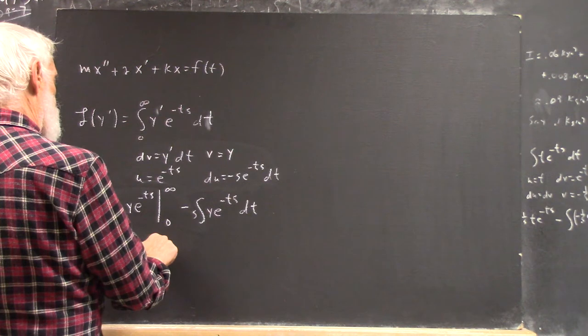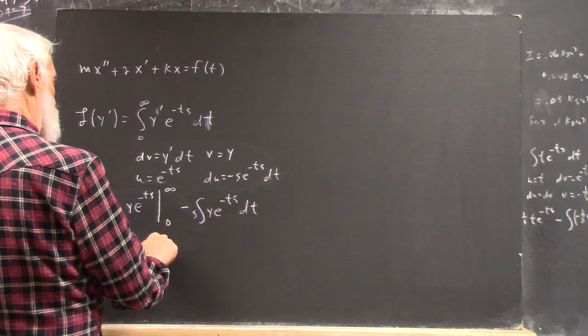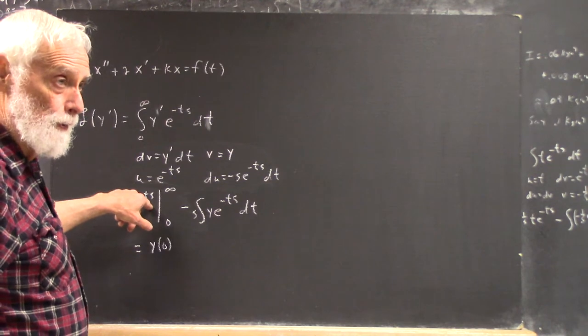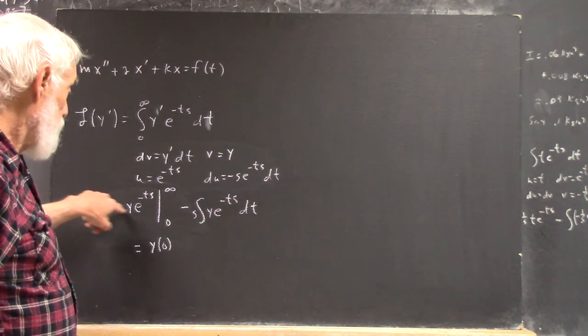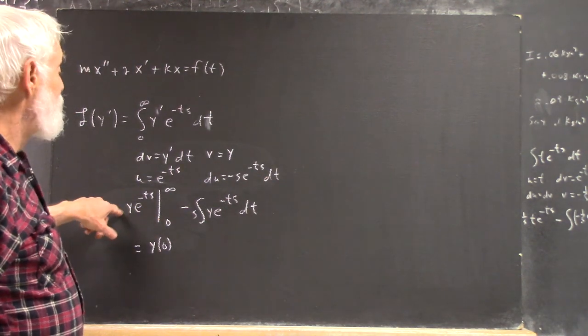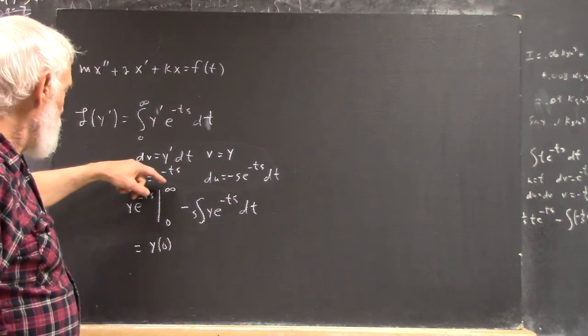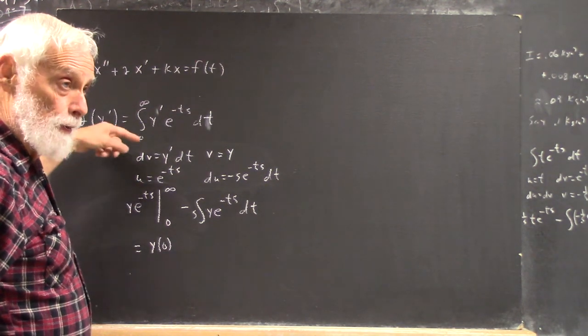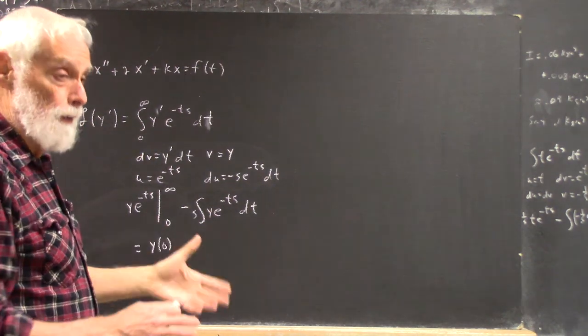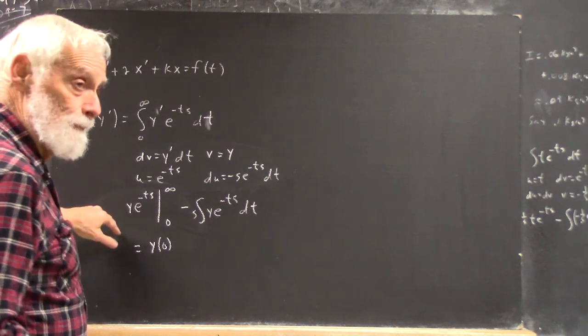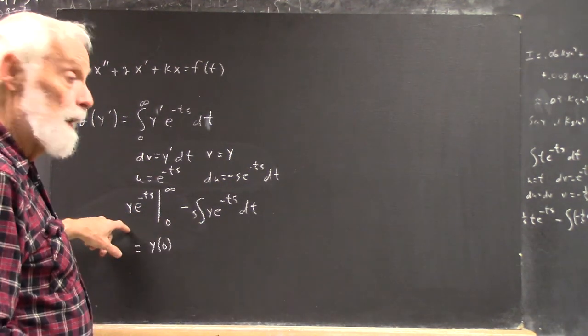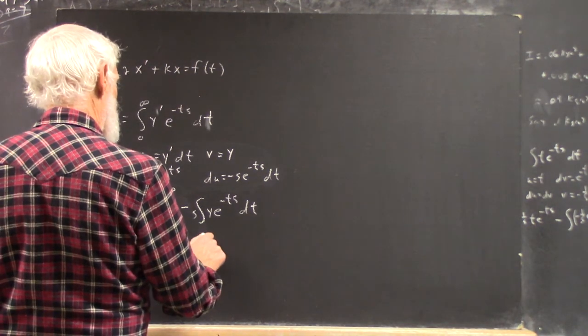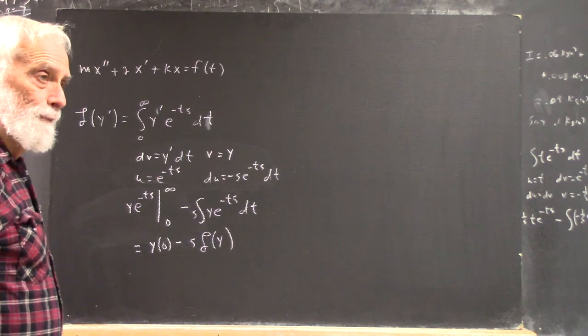And that's just y of zero, because e to the negative st at t equals zero is one. And y is a function, it's got to be evaluated at zero. And then y limit as t goes to infinity of y of t e to the negative st. Well, if y is any kind of reasonable function, e to the negative st is going to go to zero a lot faster than y is going to go to infinity. So you have restrictions on the functions. You got to read the absolute definition of this, what sorts of functions this applies to, but it applies to most of the functions you're going to encounter. And then that's minus s times the Laplace transform of y. Plus.